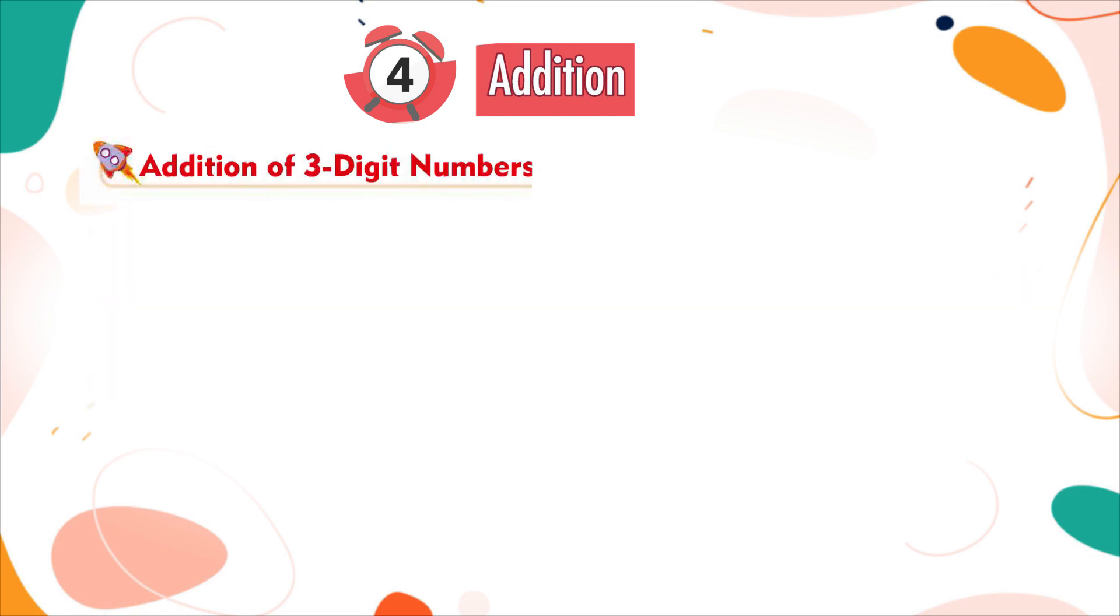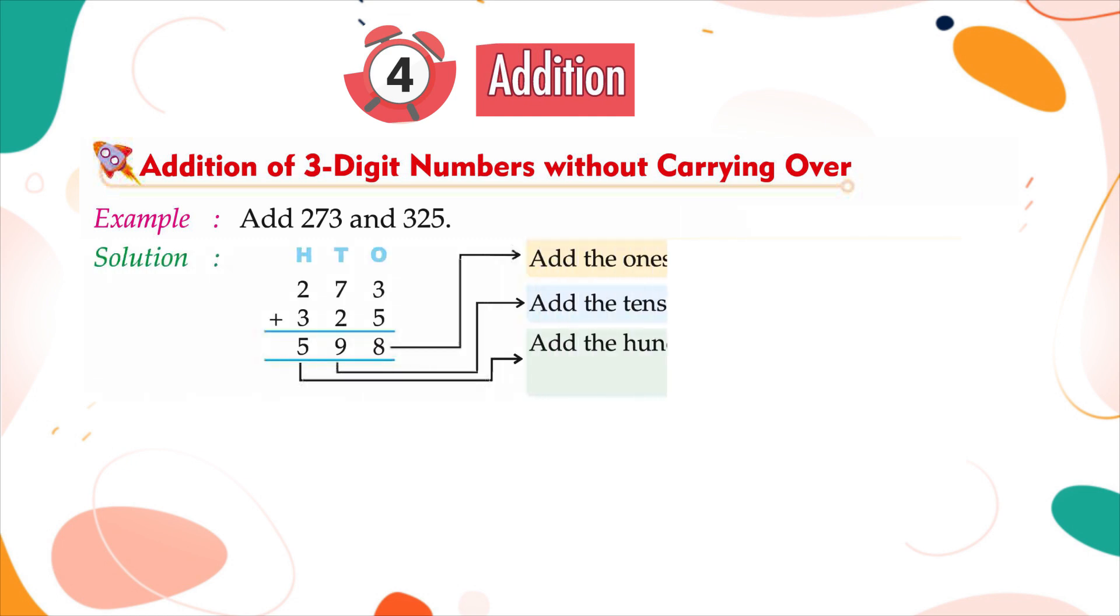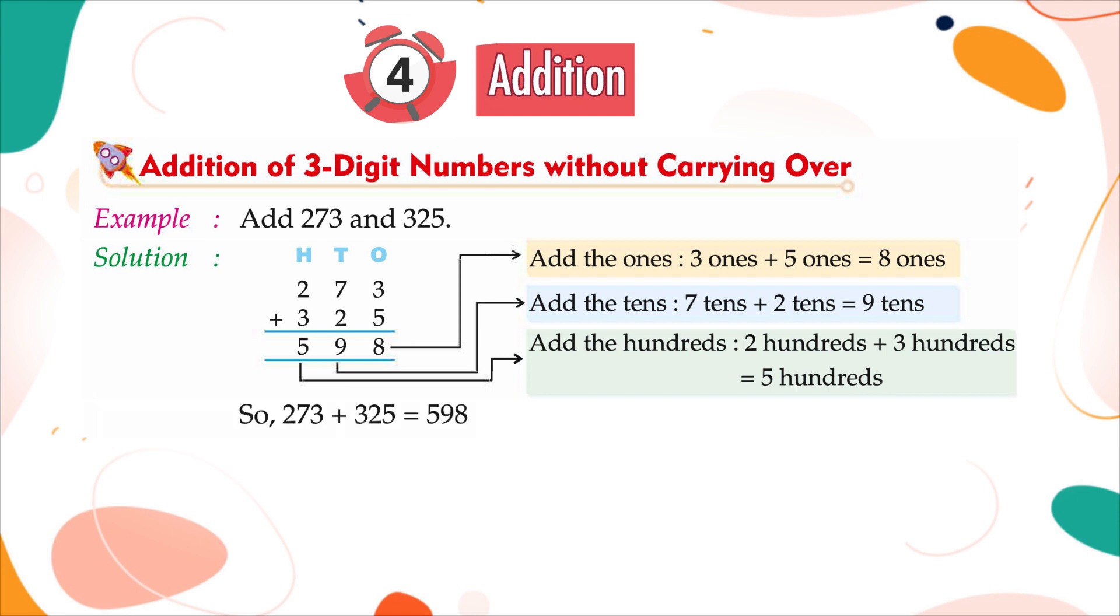Addition of three-digit numbers without carrying over. Example: Add 273 and 325. Add the ones: 3 ones plus 5 ones is equal to 8 ones. Add the tens: 7 tens plus 2 tens is equal to 9 tens. Add the hundreds: 2 hundreds plus 3 hundreds is equal to 5 hundreds. So, 273 plus 325 is equal to 598.